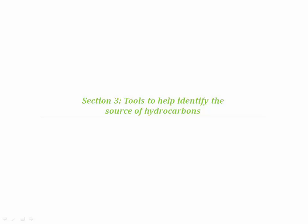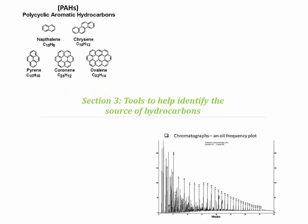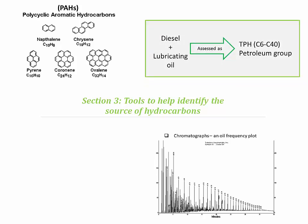Section 3: Tools to help identify the source of hydrocarbons. You should always ask your laboratory to provide an interpretation as to the type of oil in the hydrocarbon analysis. A good lab can provide an interpretation of the data in the chromatogram and other organic results such as PAHs to better indicate the source or sources of your hydrocarbons. If your lab reports that your hydrocarbons arise from more than one type of oil — for example diesel and lubricating oil — you now have an unknown oil and have to use the TPH C6 to C40 Petroleum Group determinant. Please view section 5 to learn what you may do if the lab reports that you have a single petroleum source.